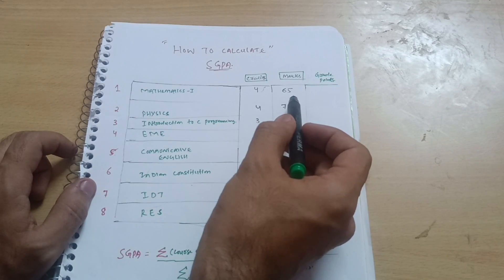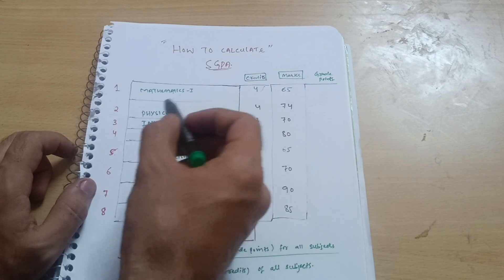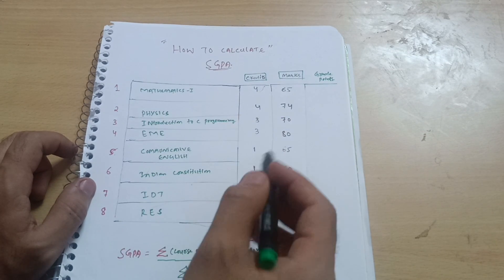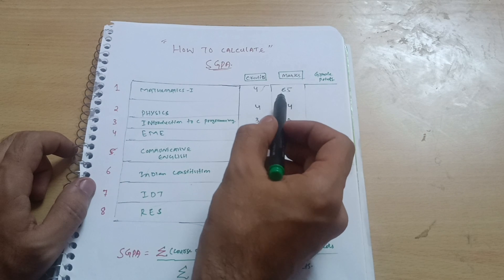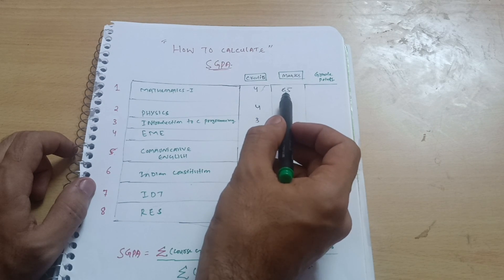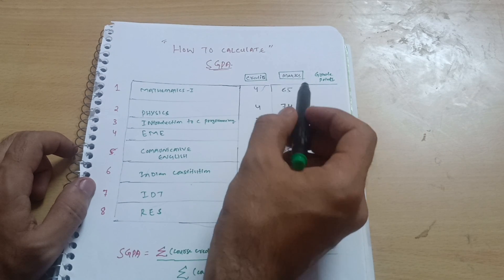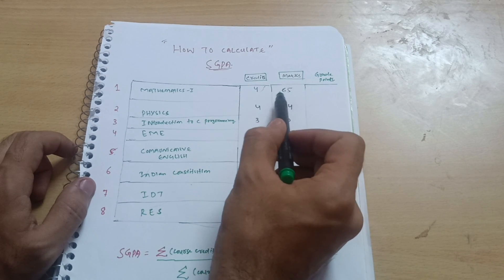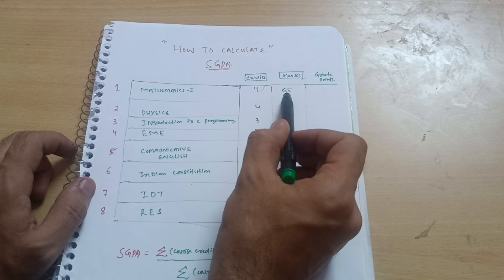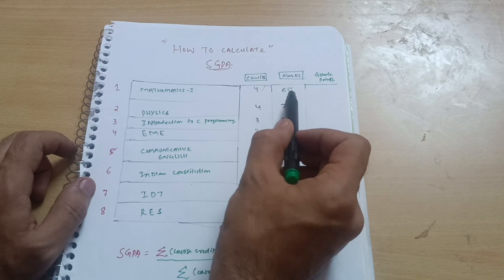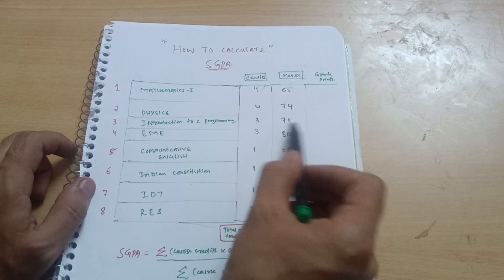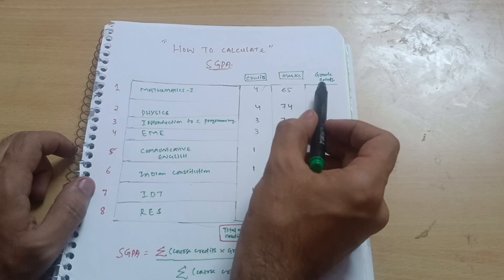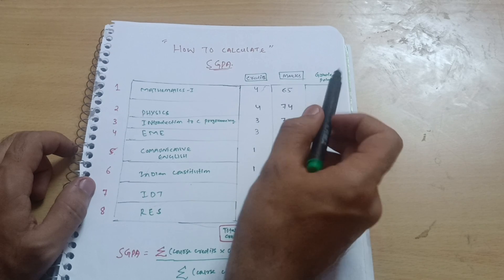Total credits are 20 in the first semester. I have taken marks for each and every subject randomly — whatever marks you have acquired in the examinations. So for Mathematics, suppose somebody has got 65 marks; for Physics, 74; then 70, and so on.